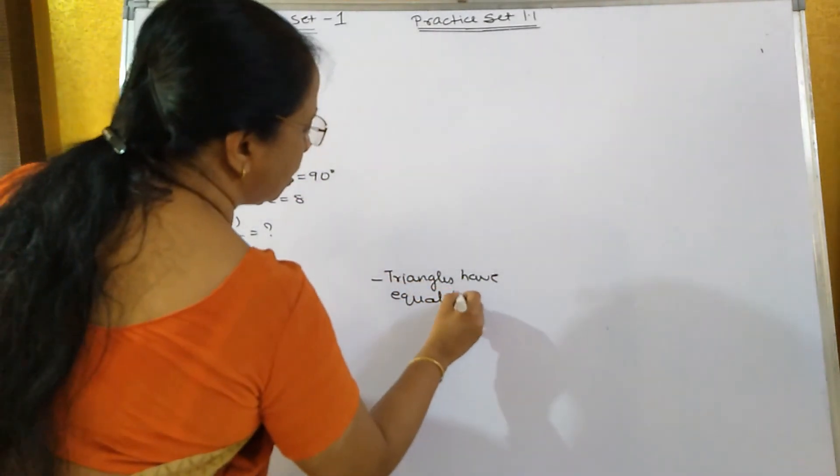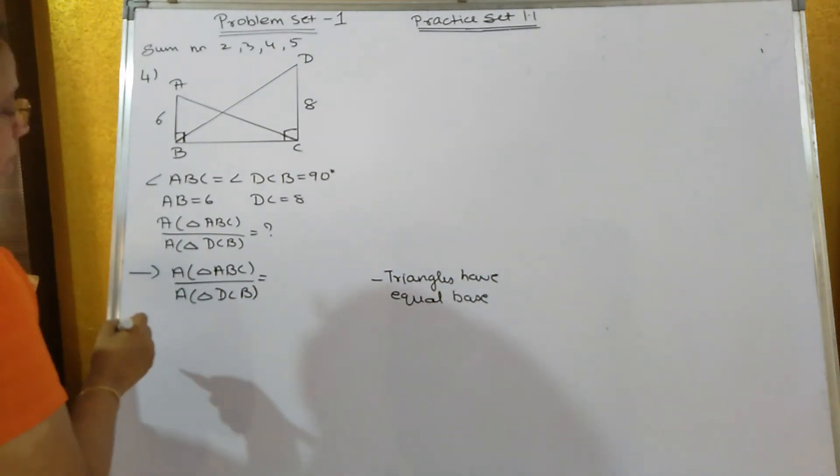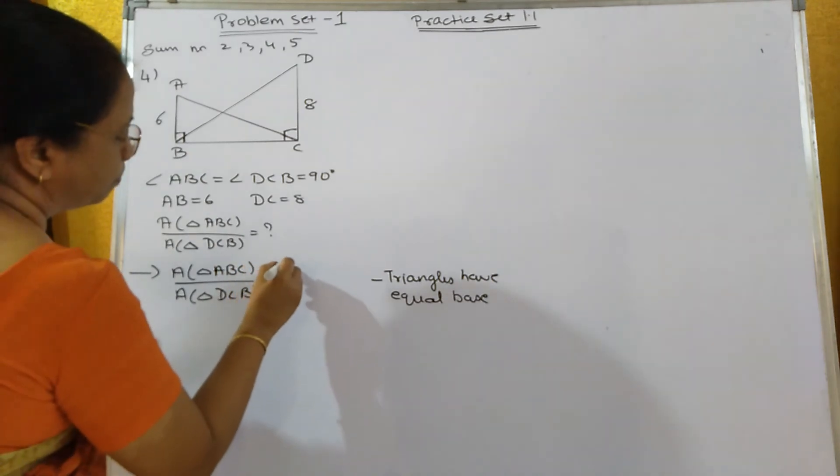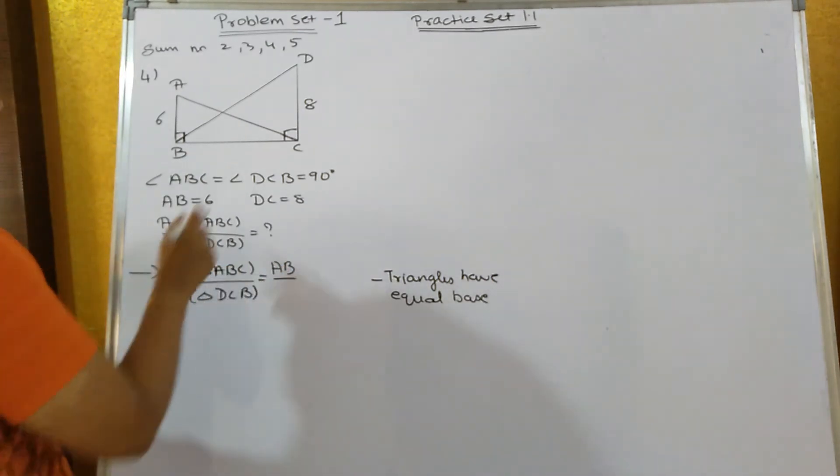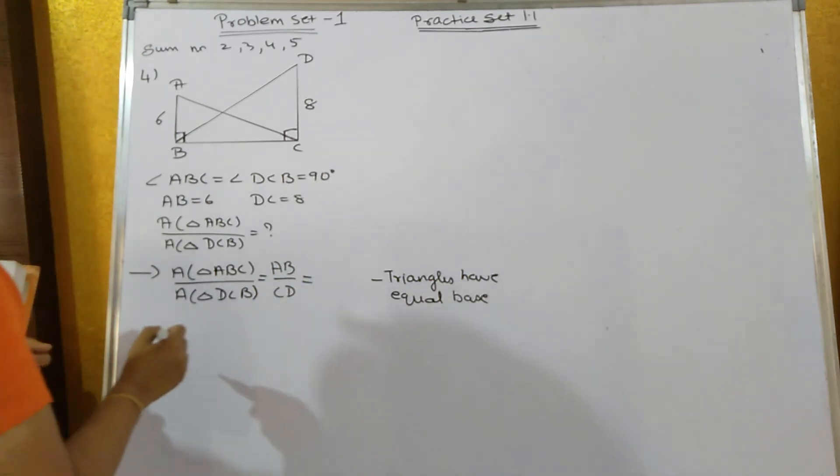So they will be in the ratio of their respective heights. In ABC, the height is AB, and in DCB, the height is CD. That equals AB = 6 and CD = 8.